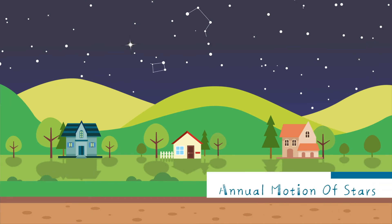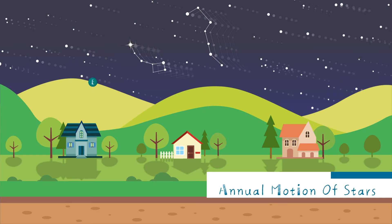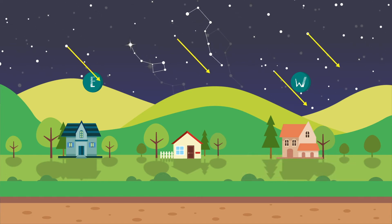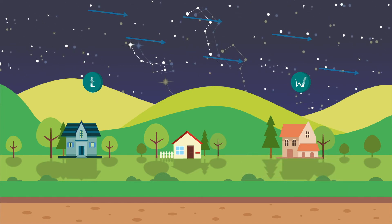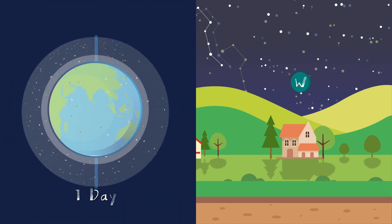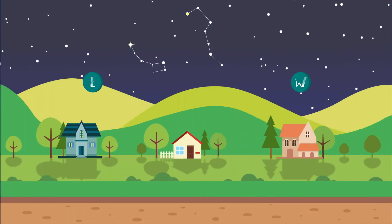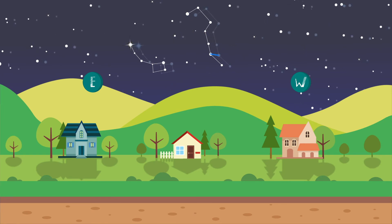Stars also have annual motion. What's different is that stars move from east to west, unlike the Earth's revolution and the sun's annual motion. While the star's diurnal motion and annual motion both occur in a clockwise direction, the diurnal motion has a cycle of one day, and the annual motion is based on one year. This means the diurnal motion has an apparent motion of 15 degrees an hour, and annual motion has an apparent motion of one degree a day.